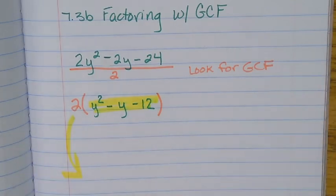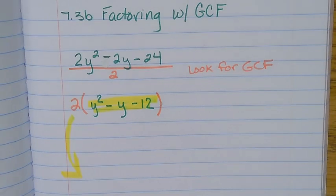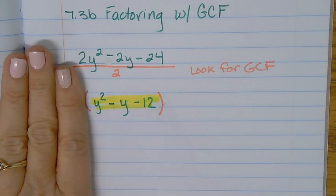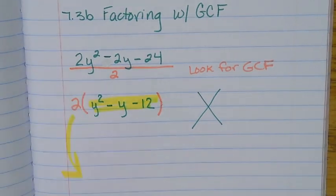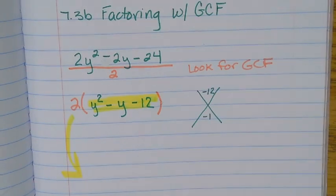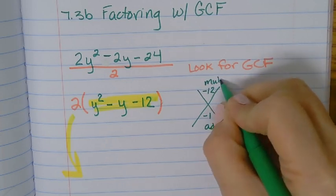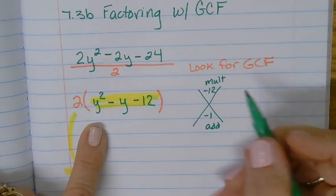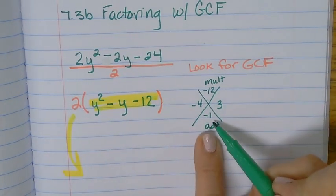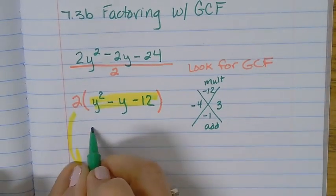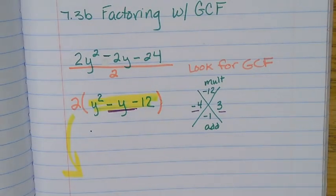So this part is what your quiz is on. Can you factor that without my help? Do it. So factor by grouping. I'm going to give you a minute to do it. Did we find numbers that multiply to be 12 and add? Three and four, and one of them is going to have to be negative, right? Four and positive three. They have to add to be negative, so that means the larger number has to be negative.